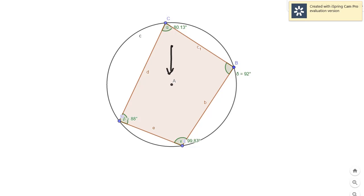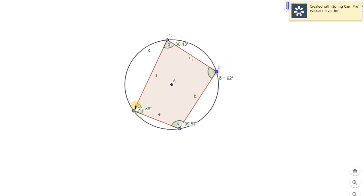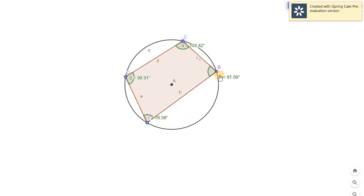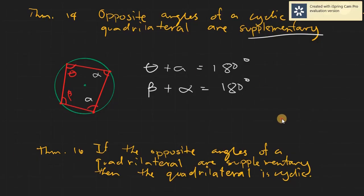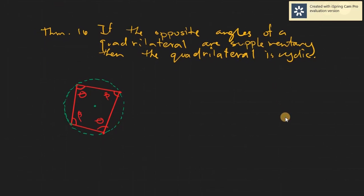Any given cyclic quadrilateral will have opposite angles as supplementary angles. Even if you try to rescale the figure, adding the opposite angles will always give you 180 degrees. That is Theorem 14. Now let's go to Theorem 16. Theorem 16, the converse, simply states that if a given quadrilateral has opposite angles that are supplementary, then the quadrilateral can create a circle — you can create a circle using the vertices.